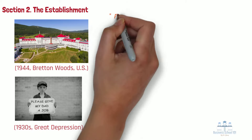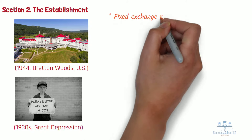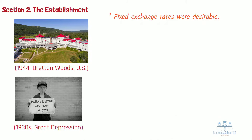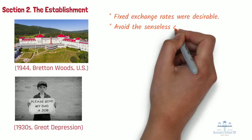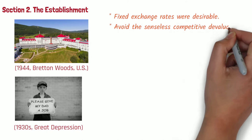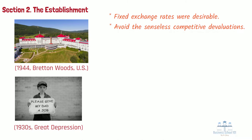There was consensus that fixed exchange rates were desirable. In addition, the conference participants wanted to avoid the senseless competitive devaluations of the 1930s, and they recognized that the gold standard would not assure this. The major problem with the gold standard as previously constituted was that no multinational institution could stop countries from engaging in competitive devaluations.